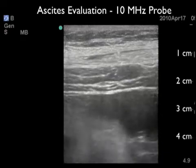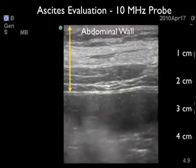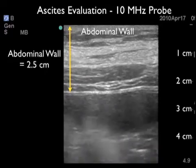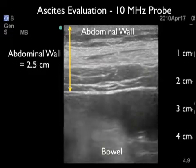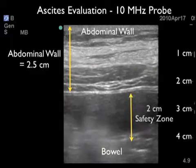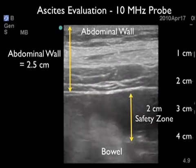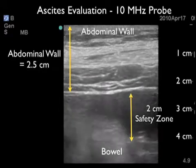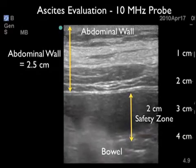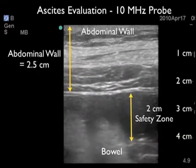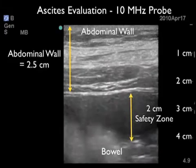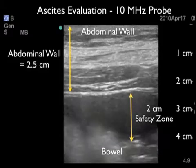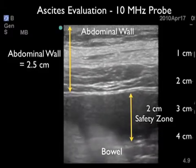Another benefit of using the higher frequency probe prior to paracentesis is to investigate the depth of the abdominal wall, as a thick abdominal wall can frustrate attempts at the procedure. Here we see the depth of the abdominal wall measuring 2.5 centimeters anteriorly. We can see the peritoneal lining just deep to the abdominal wall, ascites as the dark fluid collection just deep to the peritoneal lining, and gut sliding deep within the ascites. Note the 2 centimeter safety zone for needle placement, but we would need a needle longer than 2.5 centimeters just to get through the abdominal wall to obtain fluid.